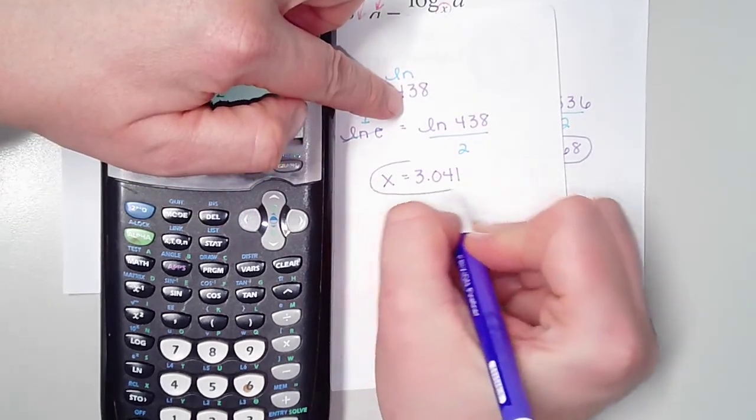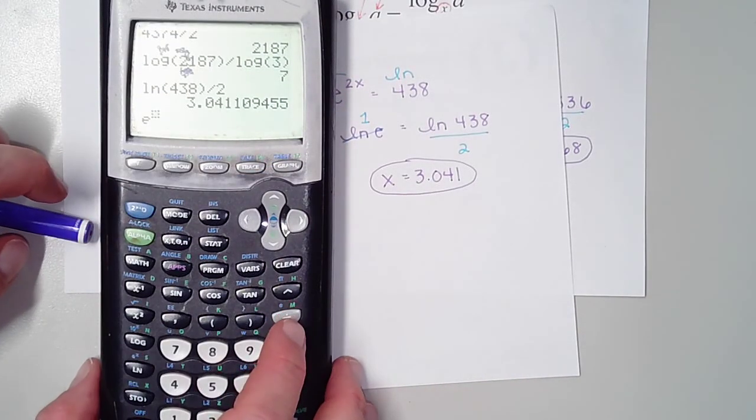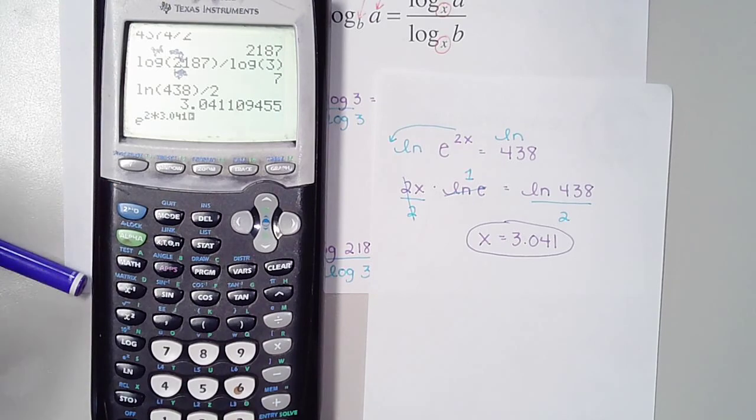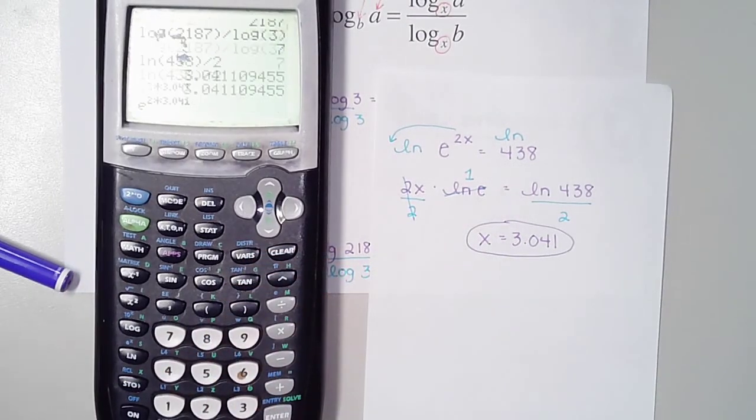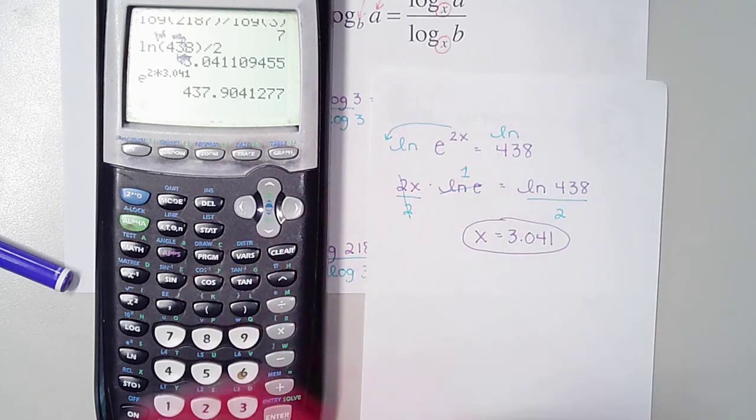If I wanted to check that in my calculator, I could go to e to the x. E to the power of 2 times 3.041 should come out awfully close to 438. The discrepancy there is just from us rounding off that decimal. When you're working with an exponential equation that has an e in it, I recommend that you use a natural log instead of a common log. You don't have to—you could have done a common log on both sides. The natural log of e cancels itself out, and that's why usually when I see an e in my problem, I know that I'm going to use a natural log.